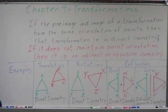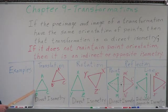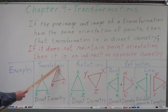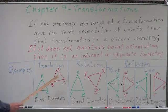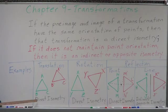Let's look at a translation — we simply move, slide, or glide the figure. Notice that with triangle ABC, if I start with A and go counterclockwise to the left, I still have A prime, B prime, C prime in the same order and same direction. So the points are in the same order — this is a direct isometry.